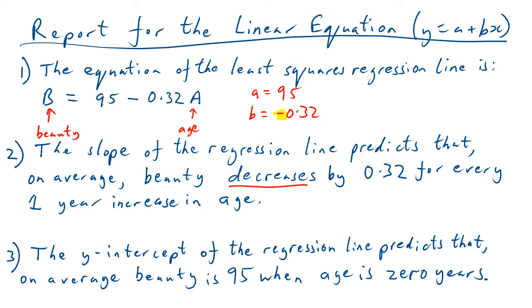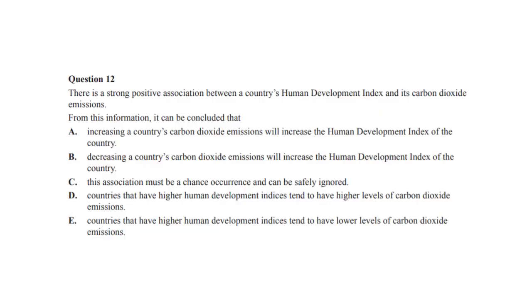And then the y-intercept statement, the third one you have to give is the y-intercept of the regression line predicts that on average, beauty is 95 when age is zero years. So apparently there might be some people who are born ugly. Oh, well, most people are born beautiful.